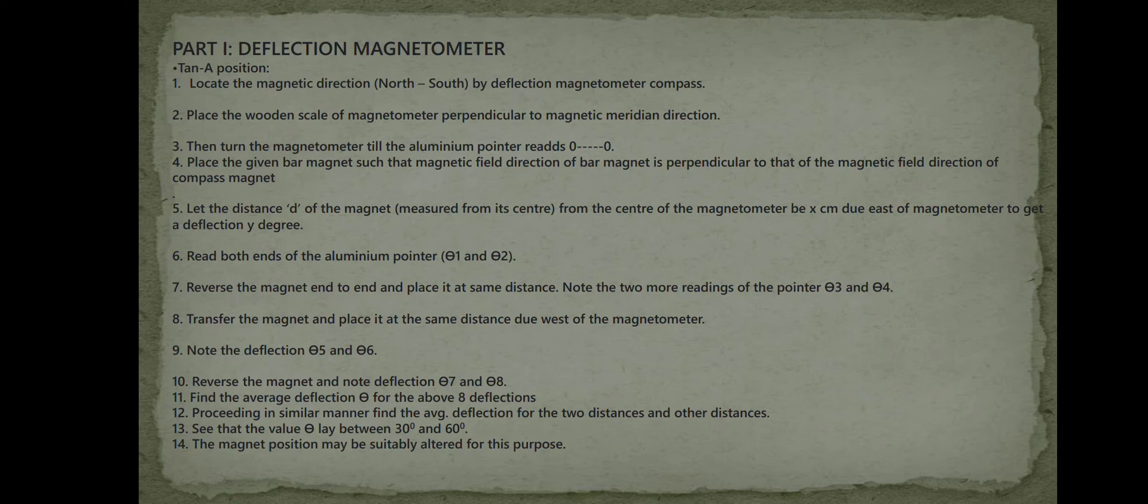Place the given bar magnet such that the magnetic field direction of the bar magnet is perpendicular to that of the magnetic field direction of the compass magnet. Let the distance d of the magnet from the center of the magnetometer be x cm to get a deflection y degrees.